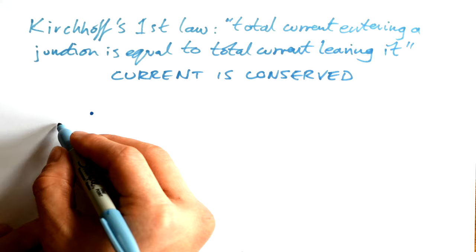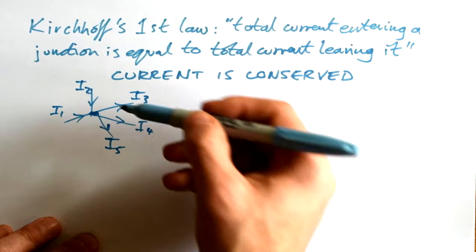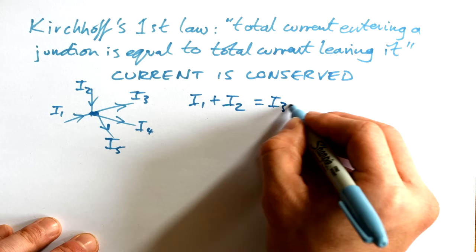Doesn't matter how many wires you have going into and out of a junction, we can call all of the currents I1, I2, I3, I4, I5 in this case. And we know that we have two currents going in, so we can say I1 plus I2 has to be equal to I3 plus I4 plus I5.